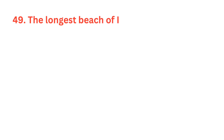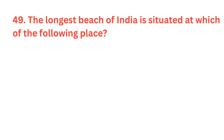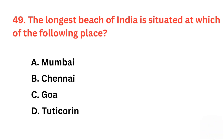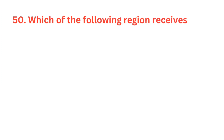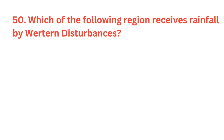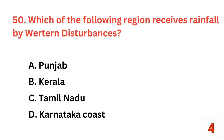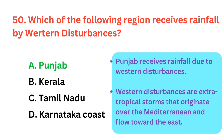The longest beach of India is situated at which of the following places? The correct answer is option B, Chennai. Which of the following regions receives rainfall by western disturbances? The correct answer is option A, Punjab.